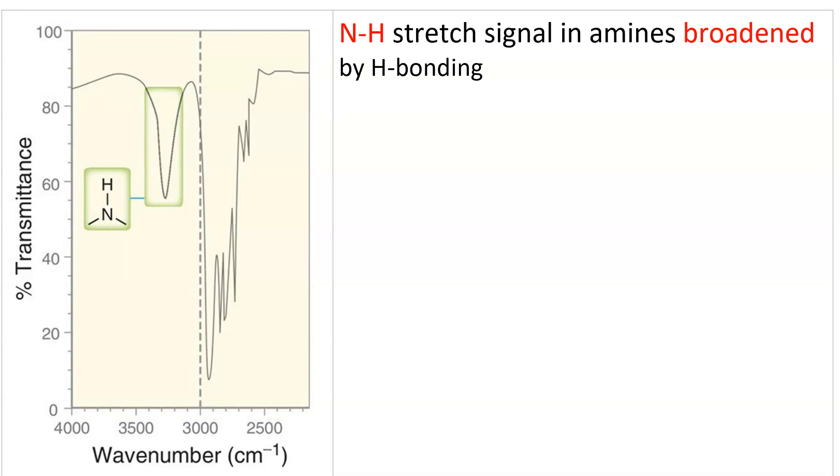Alcohols are not the only compounds that participate in hydrogen bonds. Amines can also do hydrogen bonding. See this broad signal here, centered at about 3,300 wave numbers? That's for a primary amine. Excuse me, a secondary amine. It gives you one signal, and that is the stretch between the N and the H.